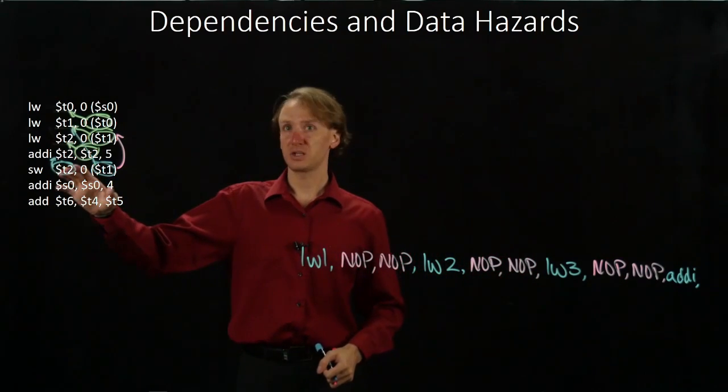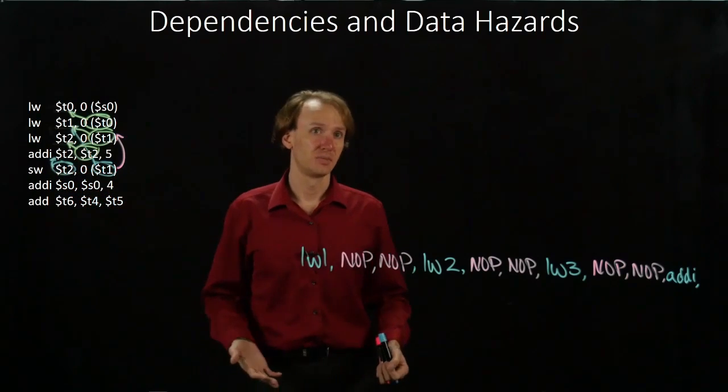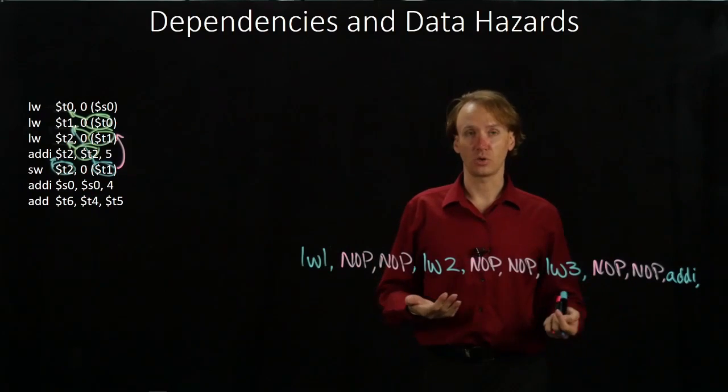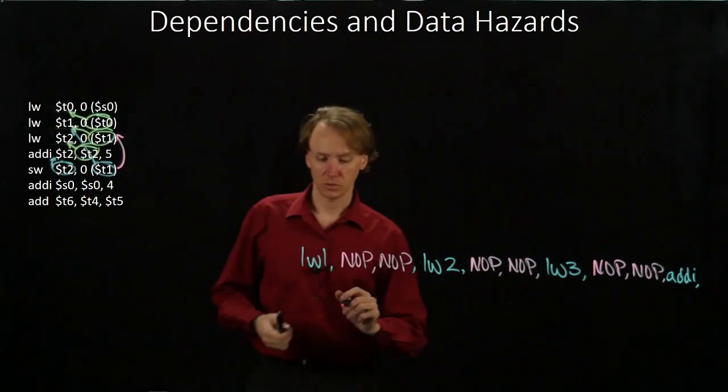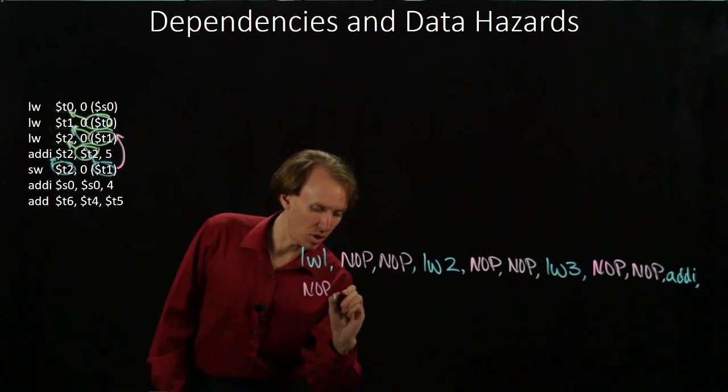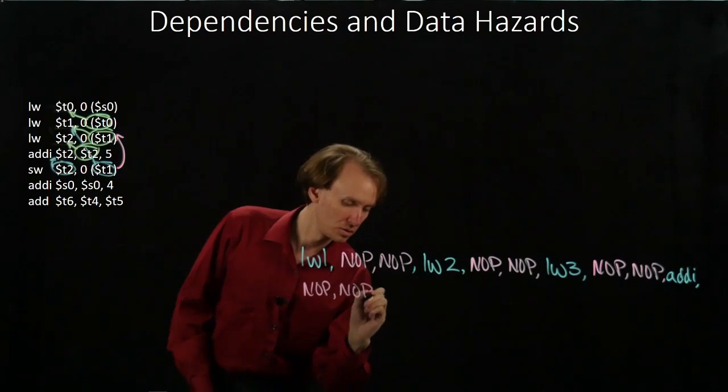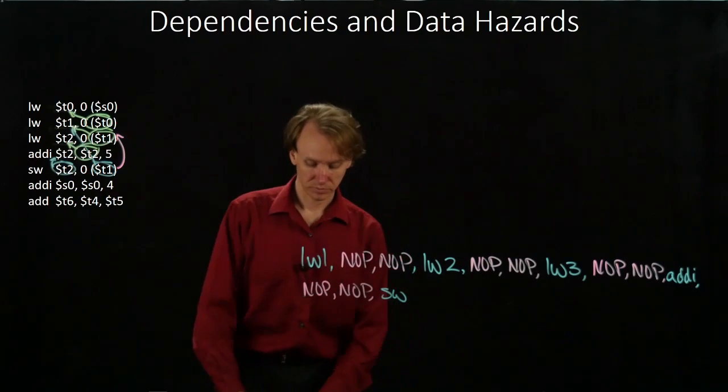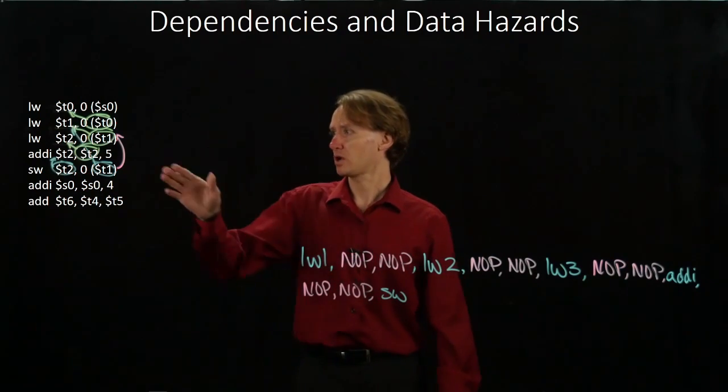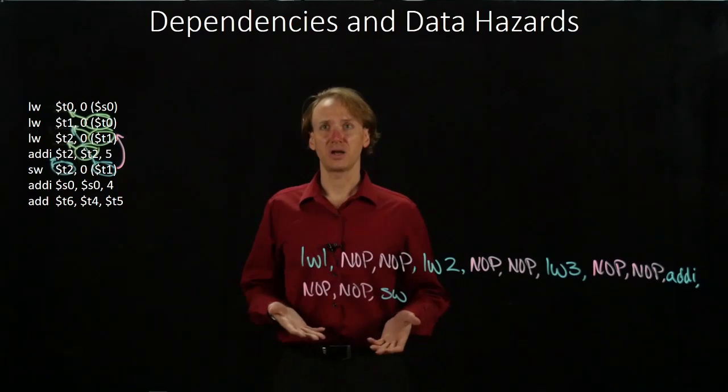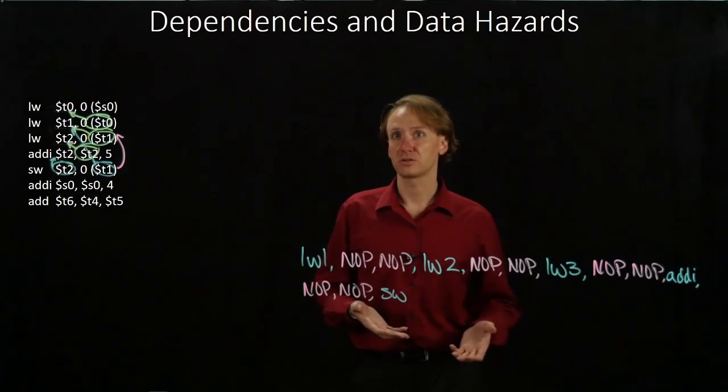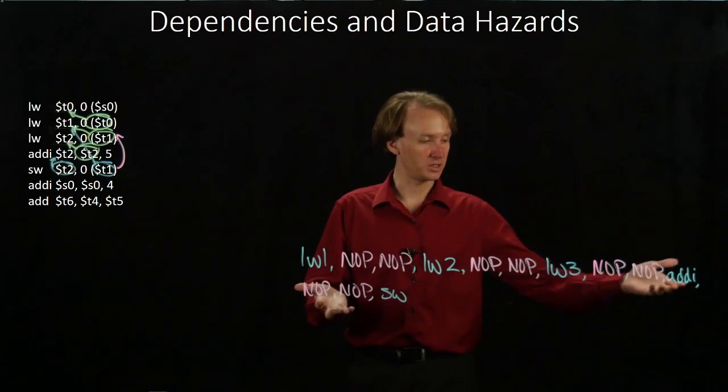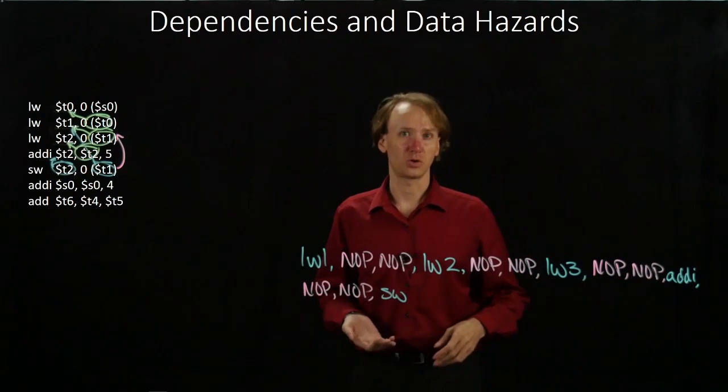But I also have a dependency between the store word and the add immediate. So I also need two instructions between the add immediate and my store word instruction. So I'll add in two no-op instructions to accommodate that dependency. I don't have to worry about this dependency because that's a write after read hazard and we don't have to worry about those. Also, there's clearly been several cycles between load word number three and my store word instruction anyway.